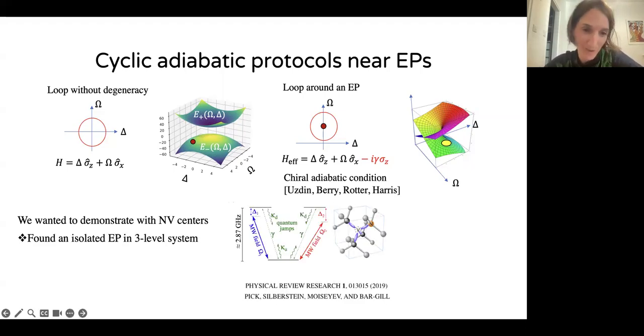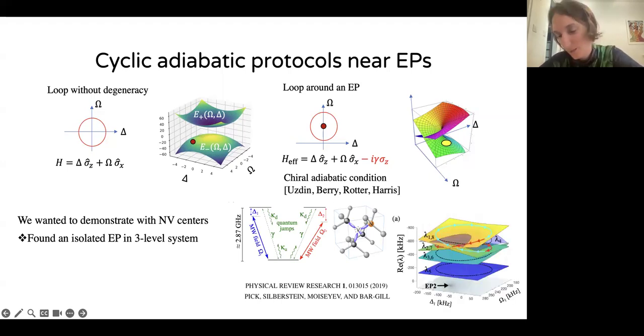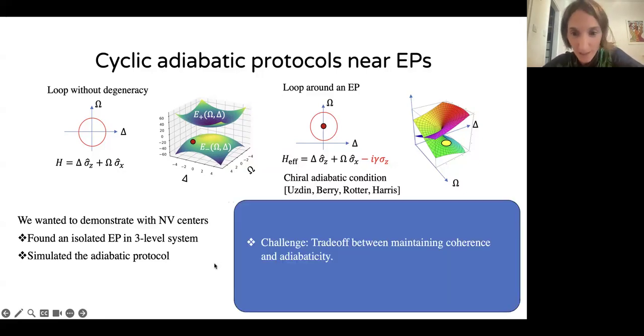As I showed on the previous slide, we found this isolated point. We could encircle it. What you see here is the energy surfaces around this exceptional point in this three-level system. It's a three-level system. The density matrix is a three by three matrix, but it traces to one. So we have eight degrees of freedom, eight energy surfaces. We have our twist. We could simulate the equations numerically, and we could demonstrate this chiral adiabatic switch. That's great. We also wanted to measure it, but we couldn't because our signal decayed too much. Basically, all the signal decohered.